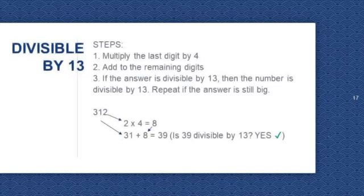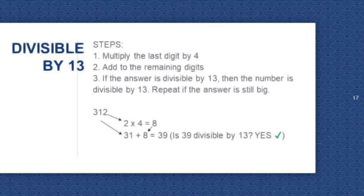Let's take a look at this example. 312. The last digit is 2, so we need to multiply it by 4. 2 times 4 is equal to 8. Now we need to add 8 to the remaining digits, which are 31. 31 plus 8 is equal to 39. Is 39 divisible by 13? Yes. So 312 is divisible by 13.